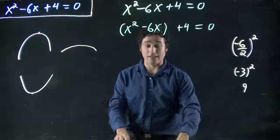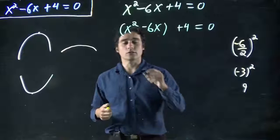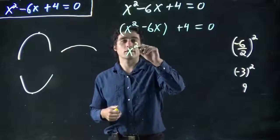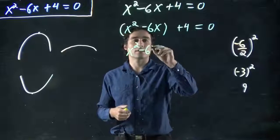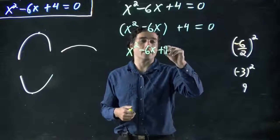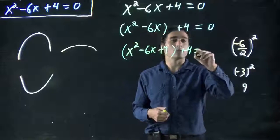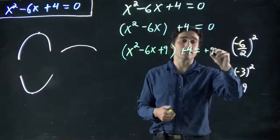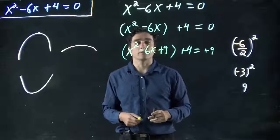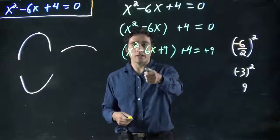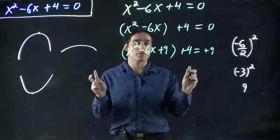We're actually going to add in 9 here. And, of course, we're adding 9 to this side of the equation. We have to add it to that side as well. So, great. x squared minus 6x and we're going to even add it in plus 9 in the bracket. Plus 4 equals, well, we added plus 9 on this side. Okay, so why did we do this?